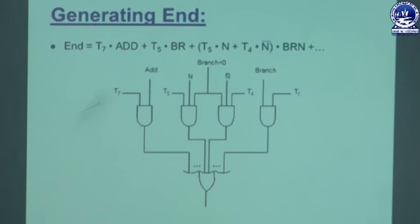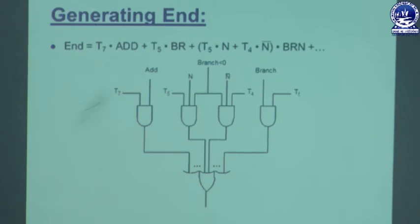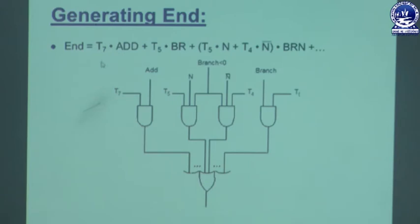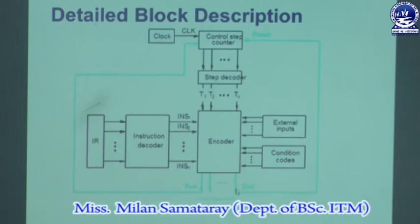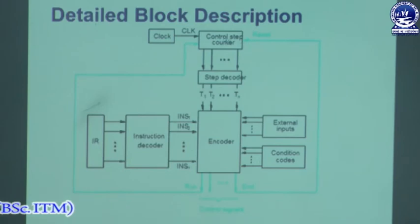This is the logic circuit for generating the END signal. In every control sequence the END control signal appears at the last of the control sequence, and that END signal is generated using this logic circuit. The END signal starts a new instruction fetch cycle by resetting the control step counter to its starting value. The control step counter counts what steps we are having during the execution of an instruction. When the processor invokes the END signal, the step counter is reset — initialized again — so the next instruction will start its execution.